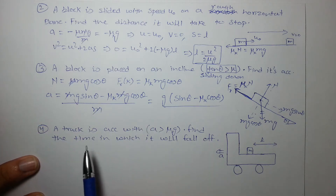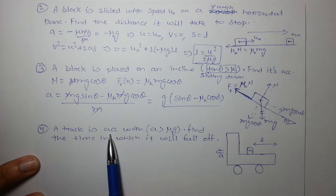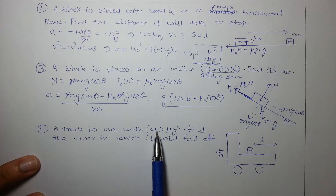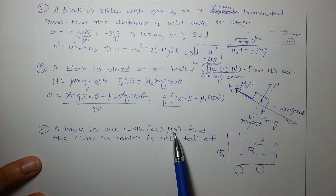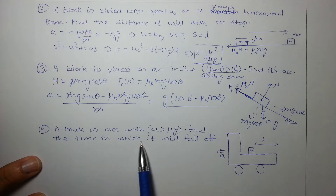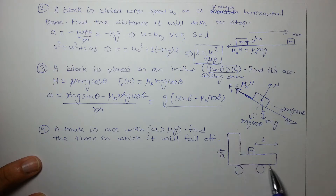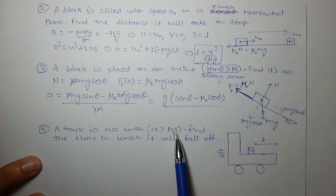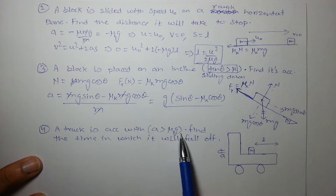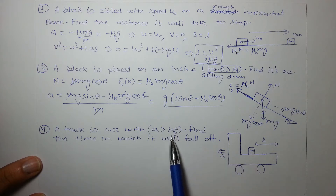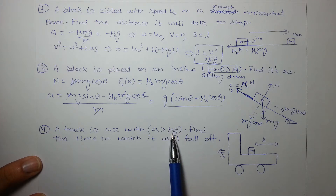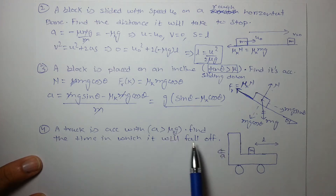In the next example, a truck is accelerating with acceleration a, which is greater than μg. Find the time in which the block on the truck will fall off. μg is basically the maximum acceleration that can be provided by friction alone. So if the truck accelerates with greater acceleration, the block will start sliding in the backward direction and ultimately fall off after some time.